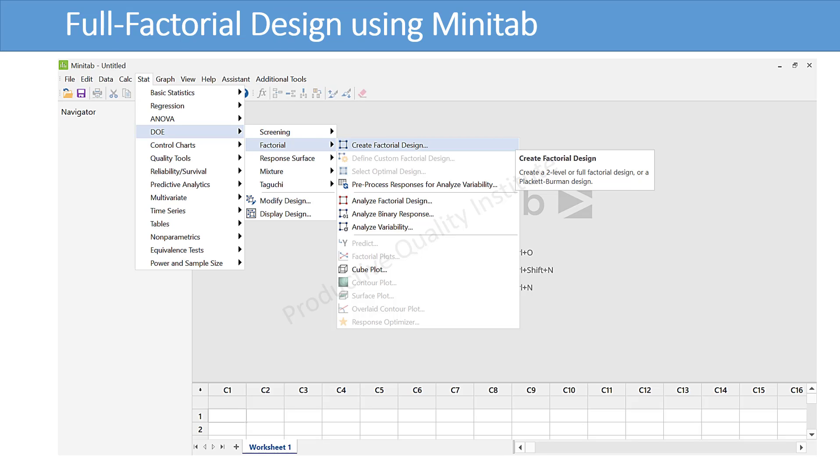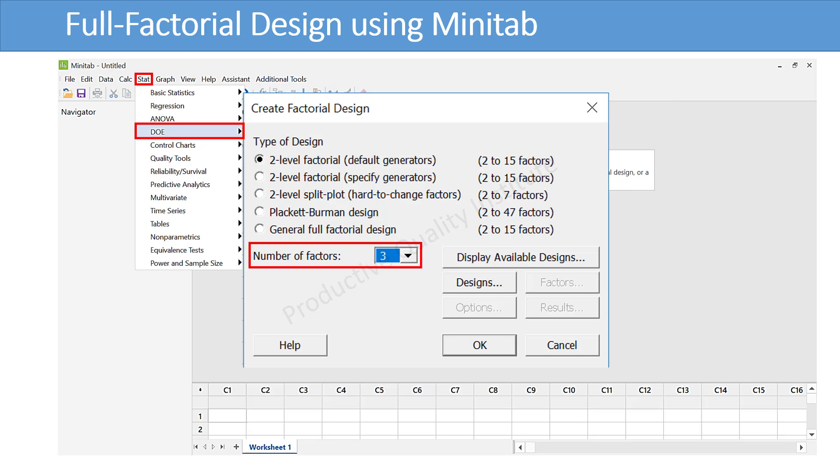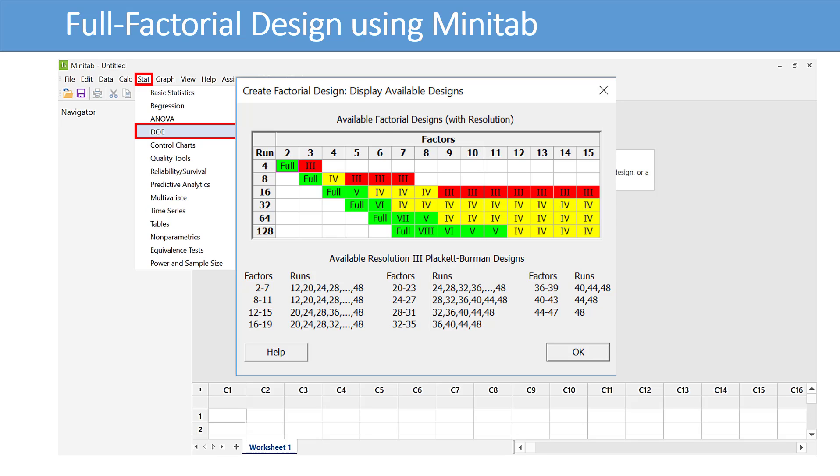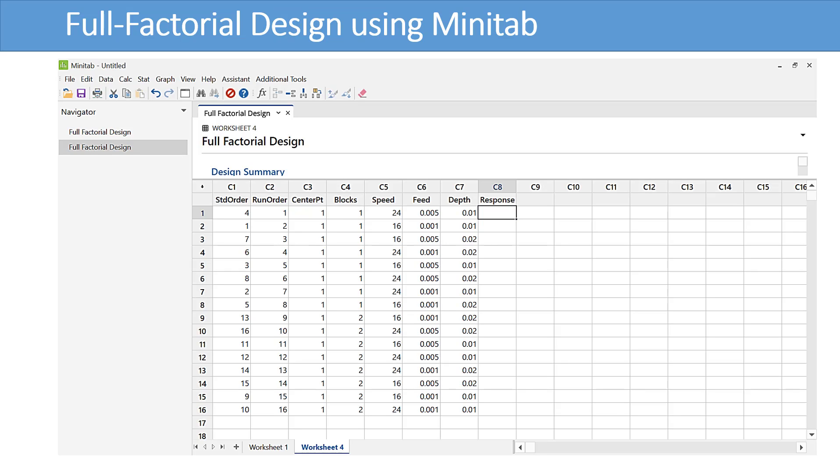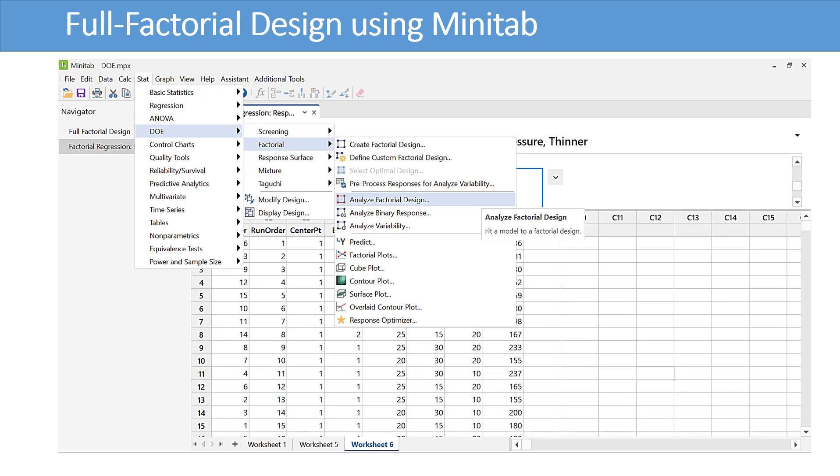To work with Minitab, click Stat, then DOE, then Factorial, then click Create Factorial Design. Choose the number of factors and type of design. Or click Display Available Design. Then click the Required Design. Enter the factor name, type, low, and high. To analyze the factorial design in Minitab, click Stat, then DOE, then Factorial, then click Analyze Factorial Design.